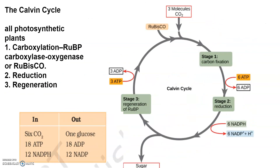Now let's discuss the Calvin cycle. Melvin Calvin, Benson, and their colleagues used radioactive carbon in Chlorella and other algae to discover that the first carbon dioxide fixation product is a three-carbon organic acid. The Calvin cycle is studied under three stages: first is carboxylation, second is reduction, and third is regeneration.